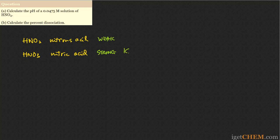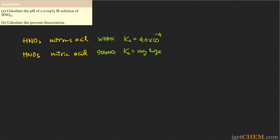A strong acid has a Ka that is very large — so large that we usually do not even specify it — whereas for a weak acid, the Ka is generally small. You can look up the Ka value for nitrous acid; these values are slightly different across books but roughly the same magnitude. In my book, the Ka for nitrous acid is listed as 4.0 × 10⁻⁴.